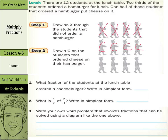So our answer — what fraction of the students at the lunch table ordered a cheeseburger, in simplest form? Well, it's this row here, and it's one out of the three rows, or four out of the 12 students. That's not in simplest form yet, so if I divide by four on top and bottom — numerator and denominator — four divided by four is one, 12 divided by four is three, so one-third. Awesome. One-third.